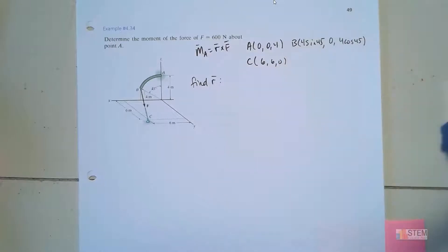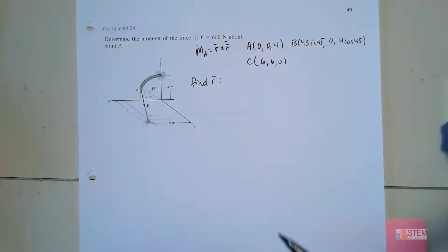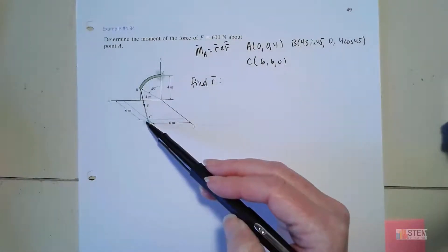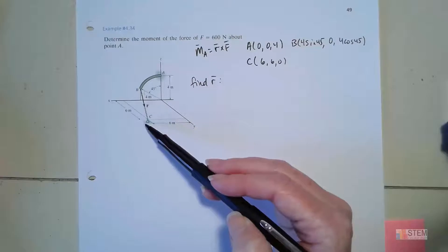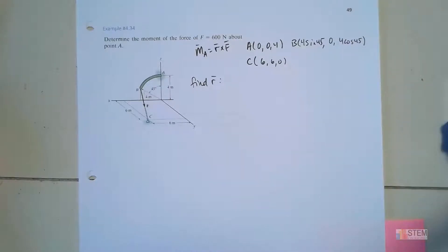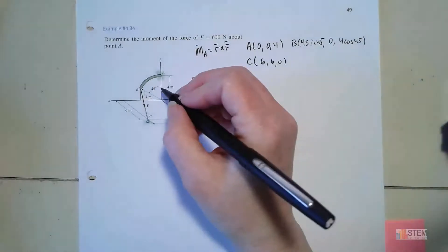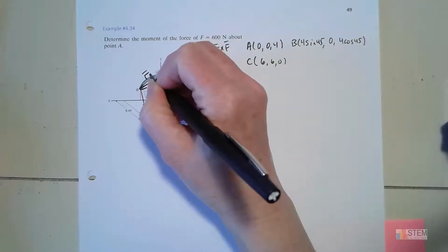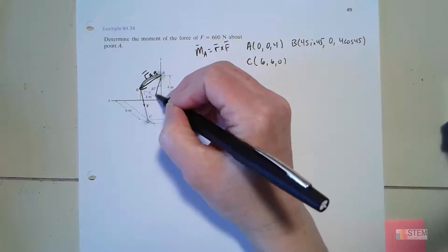Remember, when you're finding the moment, you can take the moment using any position vector that goes from the point you're interested in to any point on the line of action of the force. In this case, we have two options: R_AB and R_AC. Either one of those would work. Let's look at both of those — we'll do both moment calculations so you can see they give the same result.